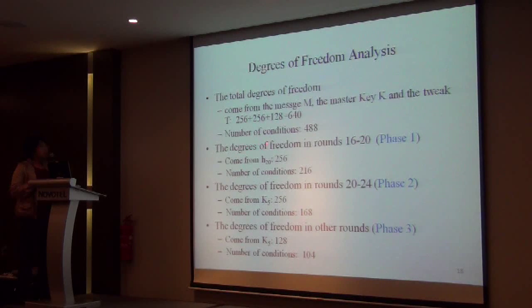Let's see the local degree of freedom. In rounds 16 to 20, the freedom is 256 bits, coming from H20. The number of conditions in this phase is 216. The degree of freedom around rounds 20 to 24, in this phase, the number of conditions is 168. So it's enough to search P5.